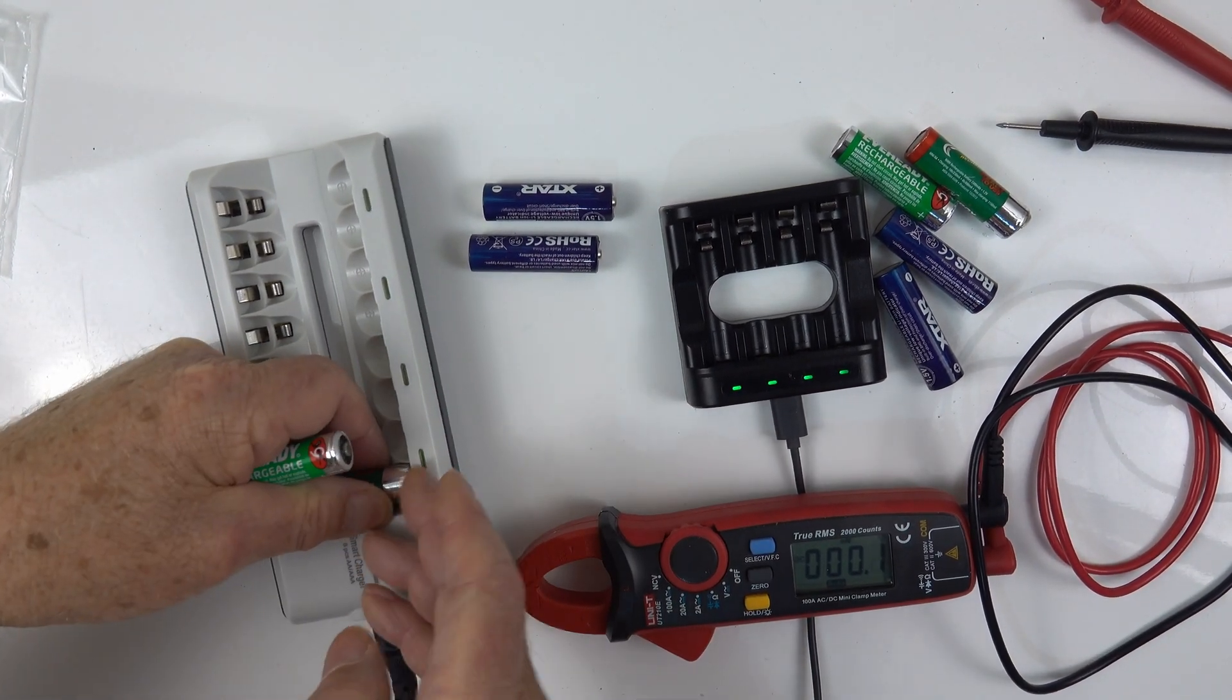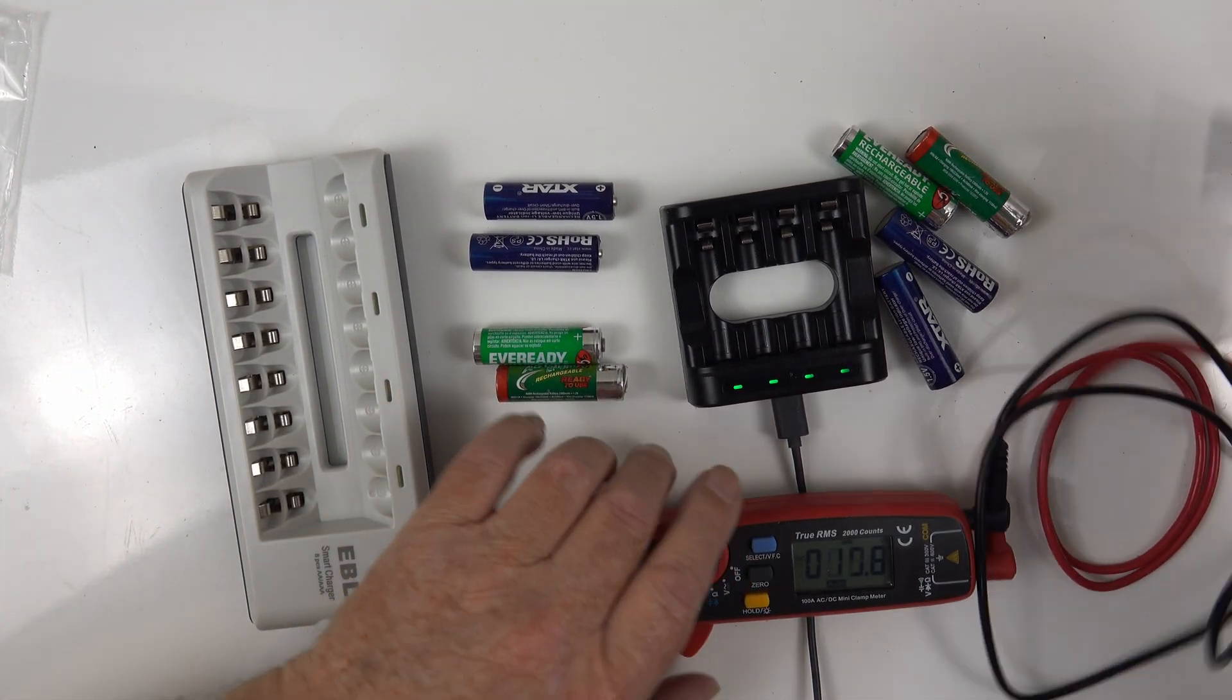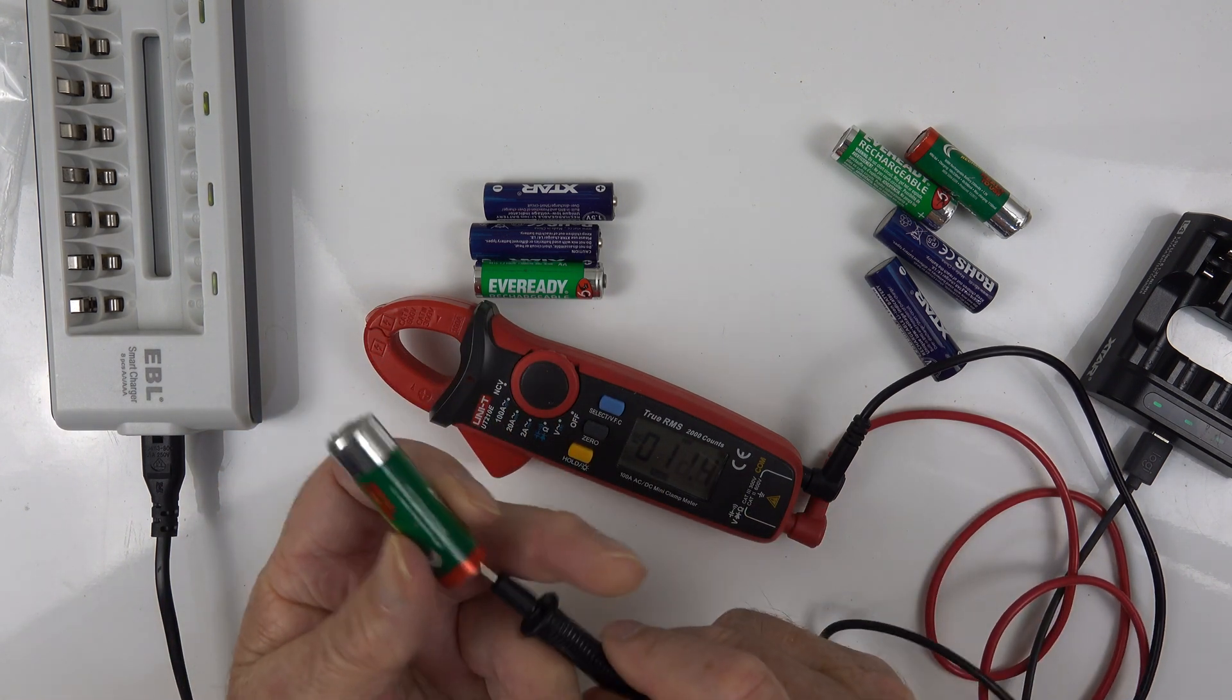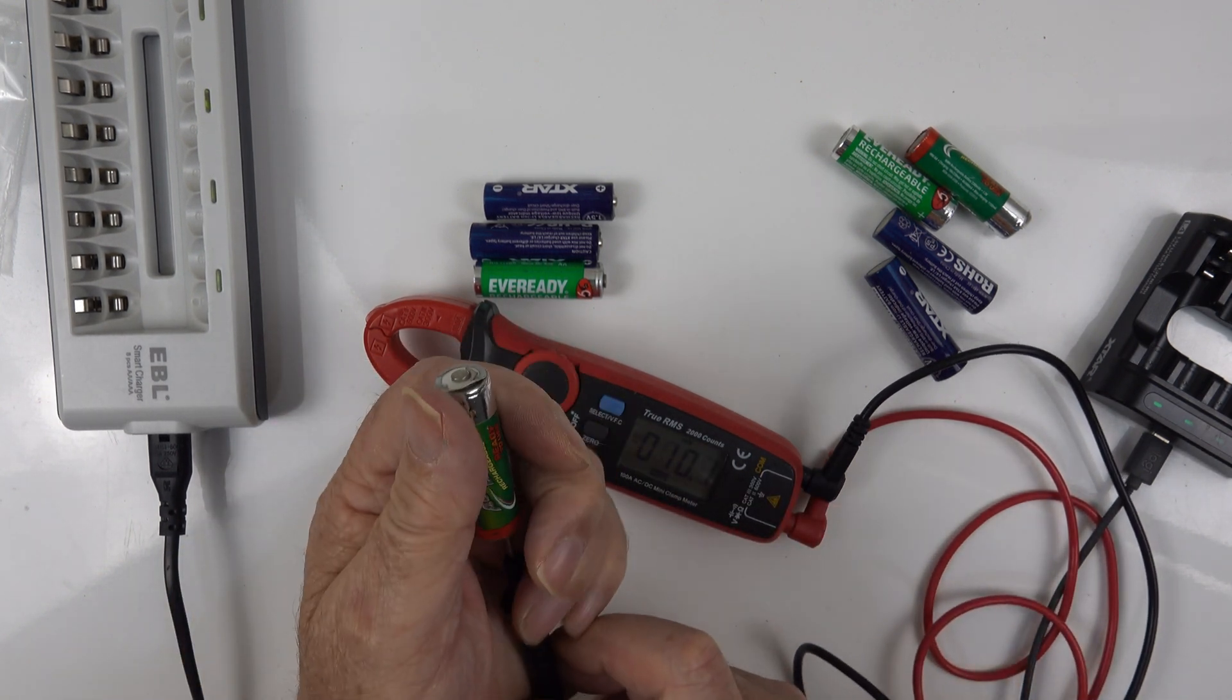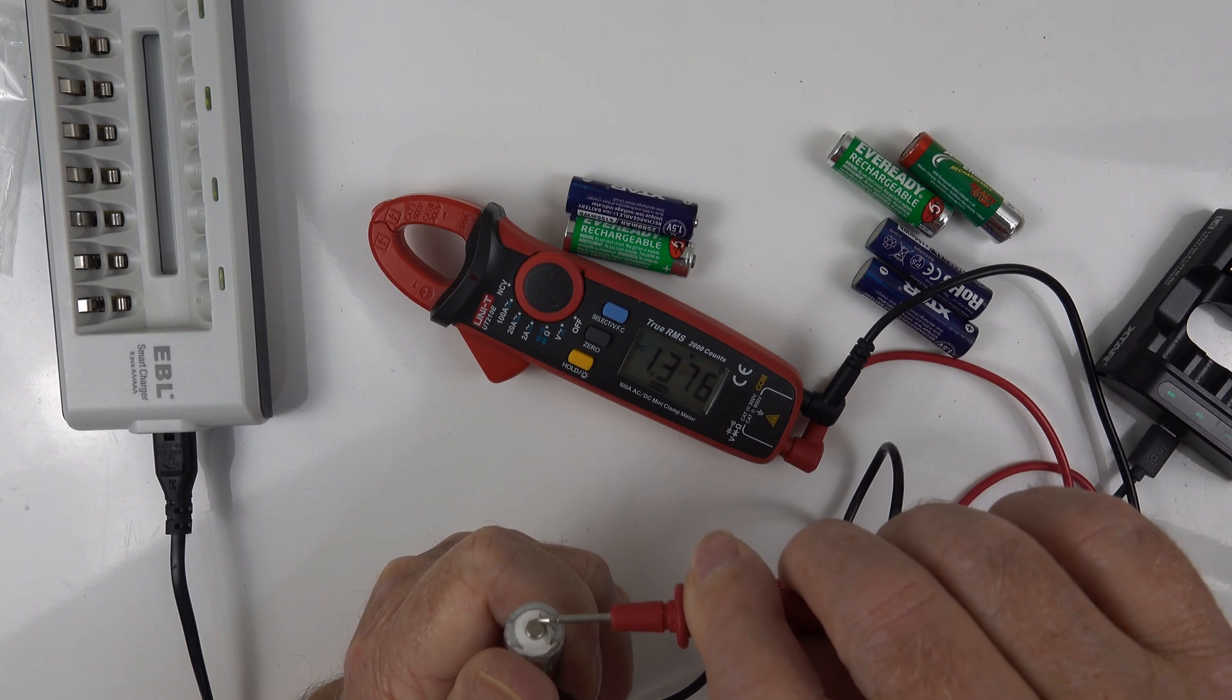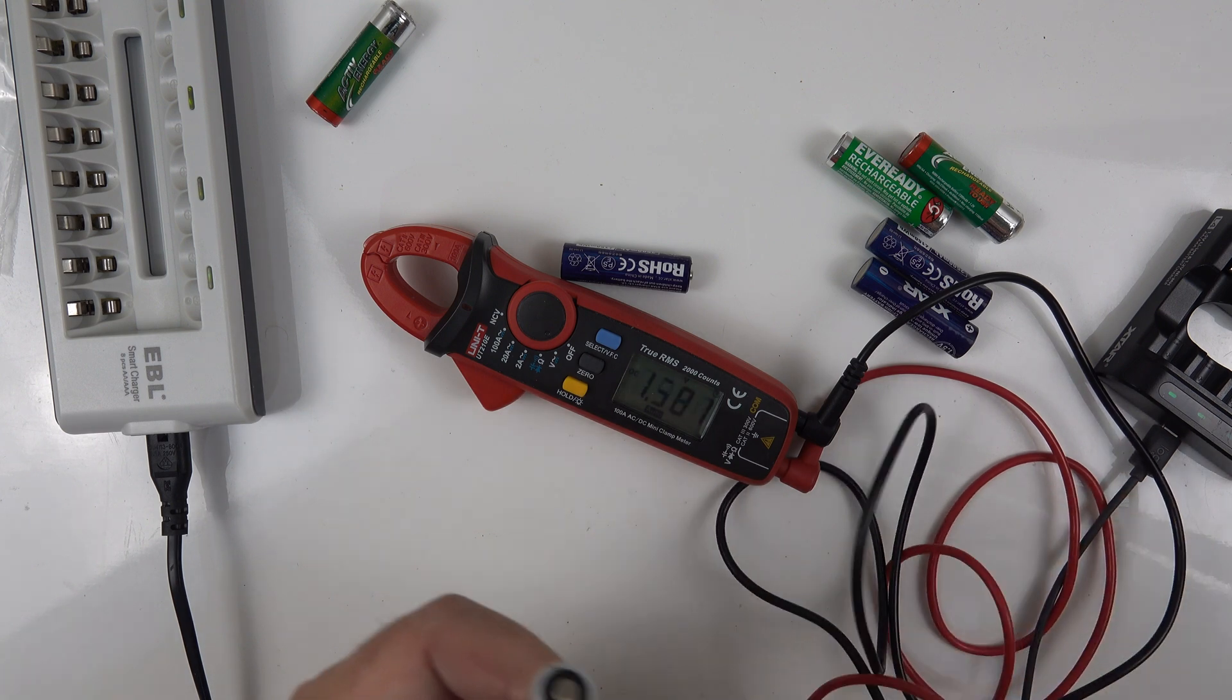So we'll bring the charger out of the way and we'll check the batteries and see what we've got. Let's see what we've got. I'm having a wonderful time. Okay, 1.376. 1.4.